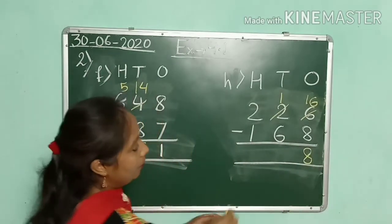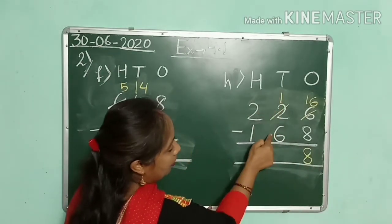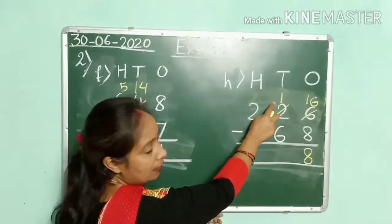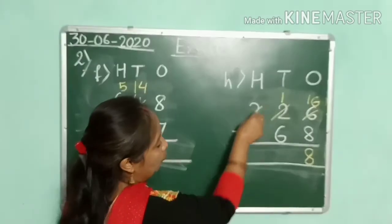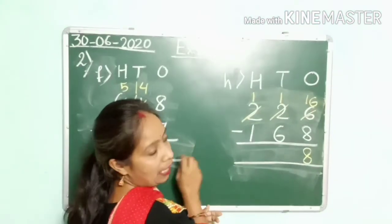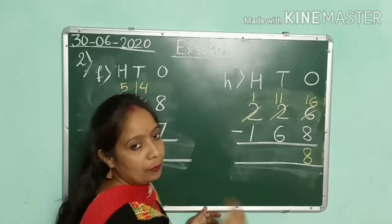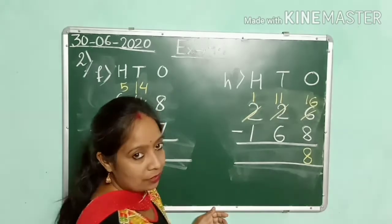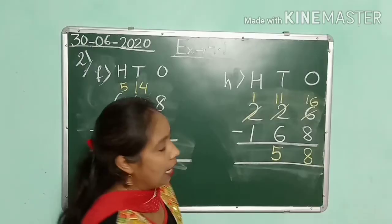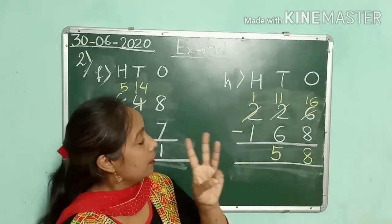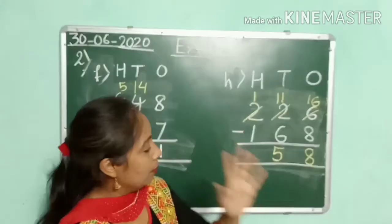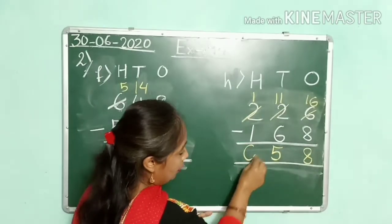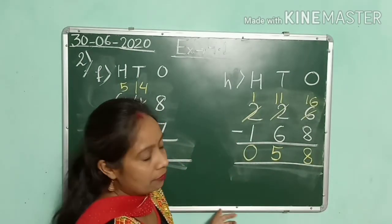Now children, here we have to subtract 6 from 1. Is it possible? No, because 1 is smaller than 6. So 1 will borrow from this 2 — 2 becomes 1 and this 1 will become 11. Now 11 minus 6 — after 6, start counting till 11: 7, 8, 9, 10, 11 — that's 5. Write here 5. And 1 minus 1 is 0. So our answer is 58.